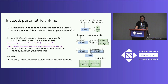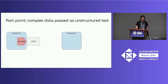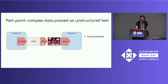Our second pain point is complex data passed as unstructured text. A common experience: program A spits out some JSON, and I'd like to feed it into program B, but in practice it takes its own arbitrary input format. So I have to write glue code to adapt between the two — that's a composability pain point. Additionally, program A has to stringify the JSON and program B has to parse its input, which costs performance. In this nanoprocess model with lots of itty-bitty nanoprocesses, this can add up to a significant percentage of the overall time.